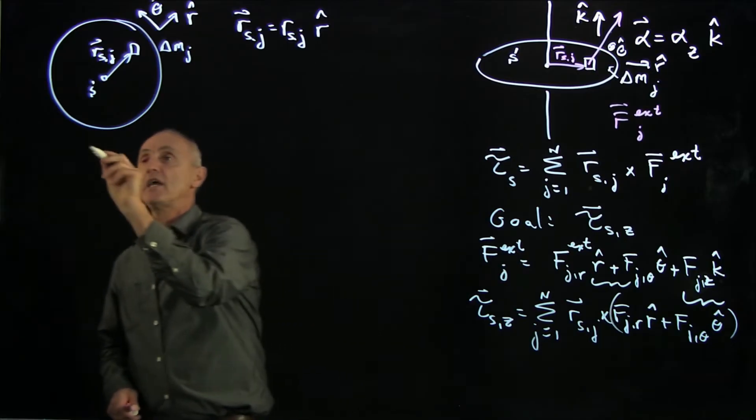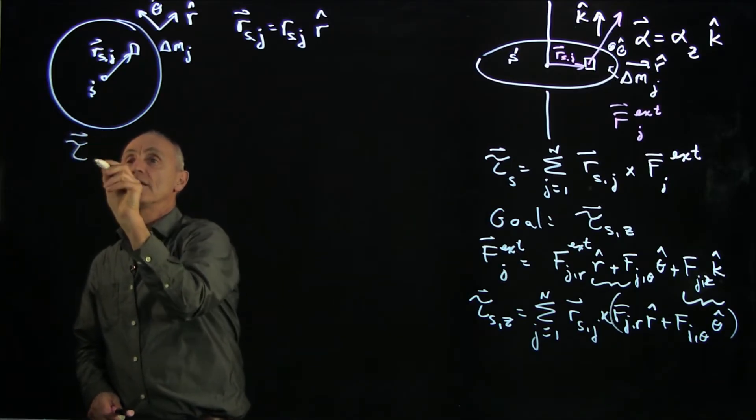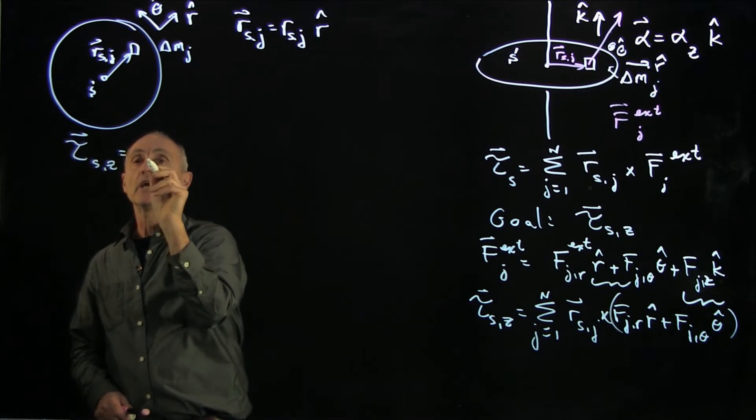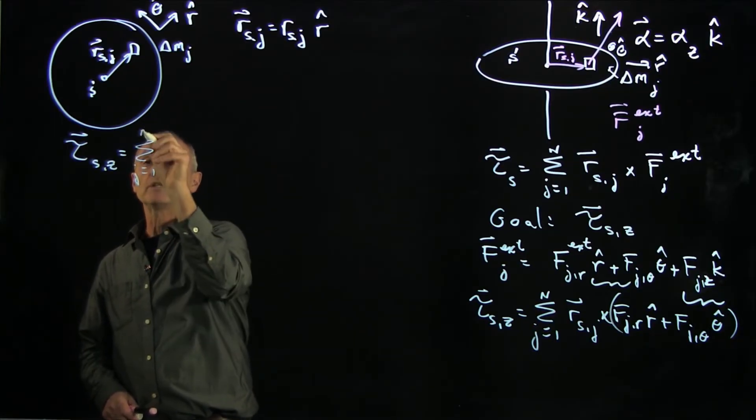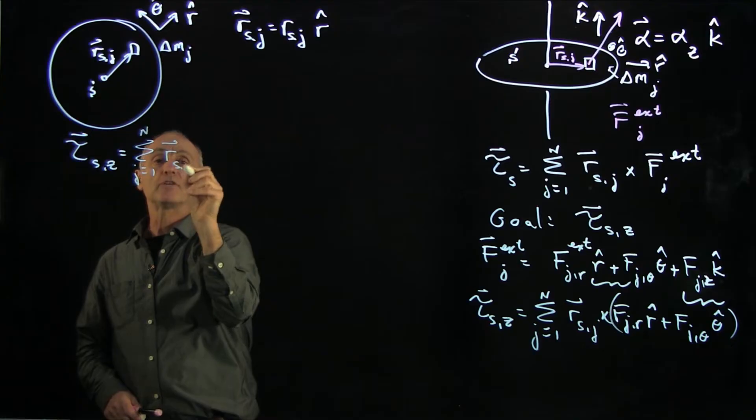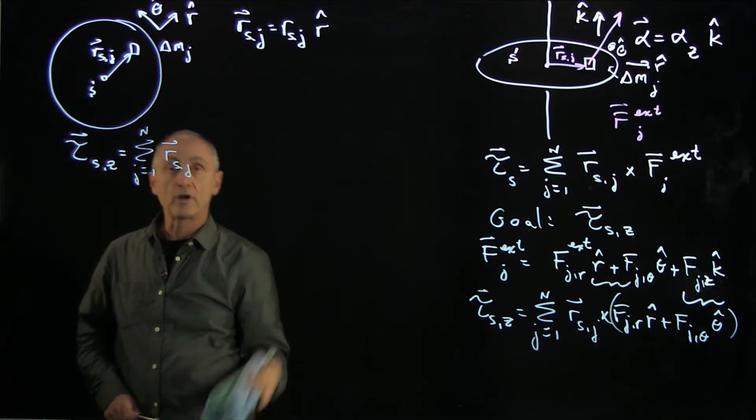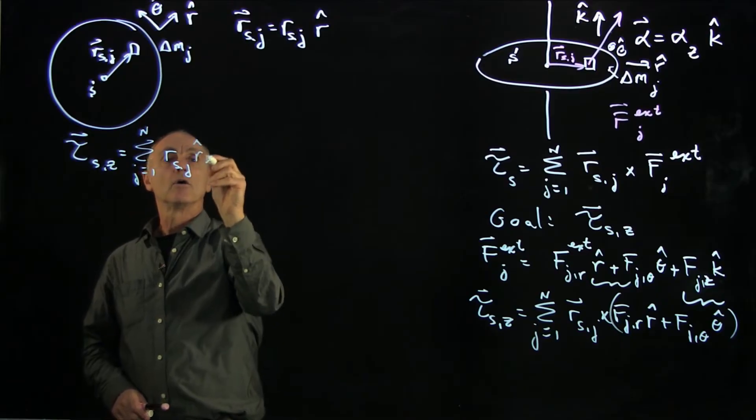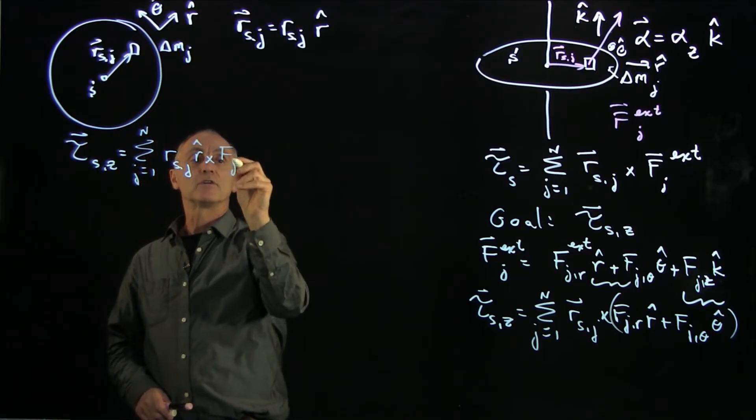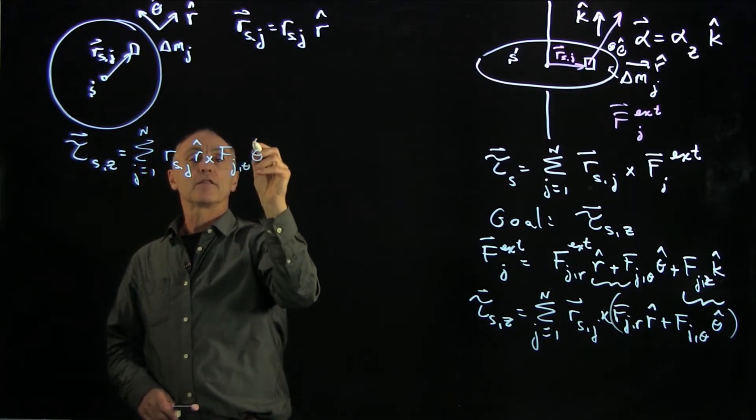And so we see our simplification is quite nice, that the z component of the torque is only arising from the sum of j goes from 1 to n of r_sj. Well, we've already, we'll write this all as vectors, r hat cross f_j theta theta hat.